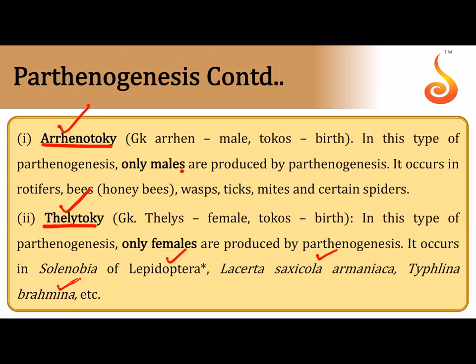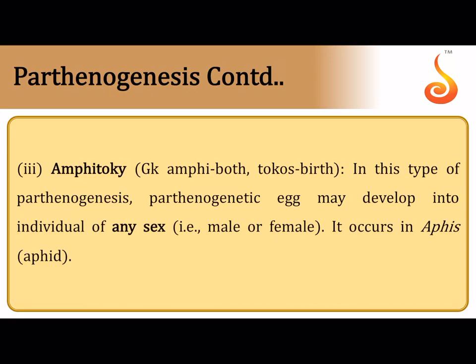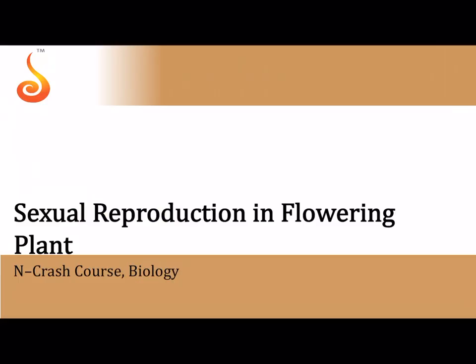In honeybees the drone is a product of parthenogenesis — the female lays an egg without fertilization. In aphids, during the fall season just before winter, the female produces both male and female aphids by parthenogenesis — when parthenogenesis results in formation of both male and female sexes it is referred to as amphitoky.